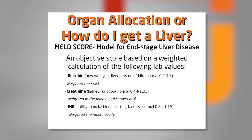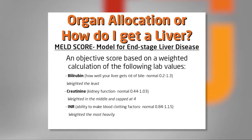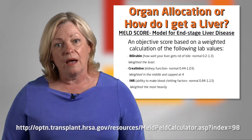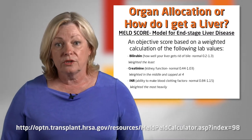It's a weighted calculation. Total bilirubin is weighted the least, so big changes in bilirubin result in smaller changes in your MELD score. The INR, however, is weighted the most heavily — small changes in your INR result in much bigger changes in your MELD score. Unfortunately, things like hepatic encephalopathy, varices, GI bleeds, and poor quality of life are not calculated in the MELD score. It is purely an objective method of determining your risk of death from liver disease. Piedmont has an app for iPhones and Androids that lets you calculate your own MELD score.